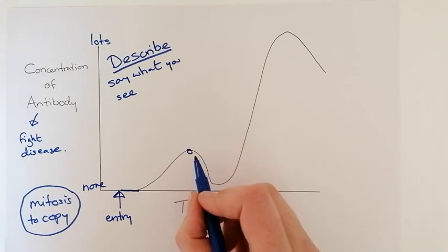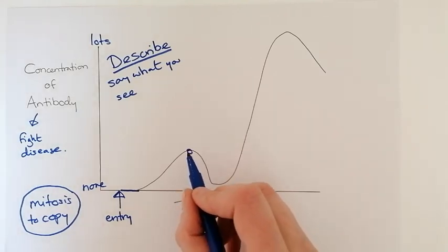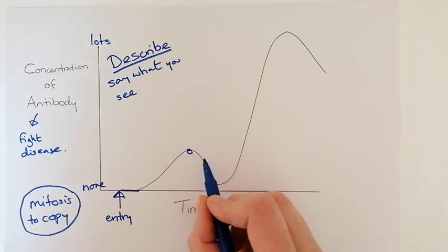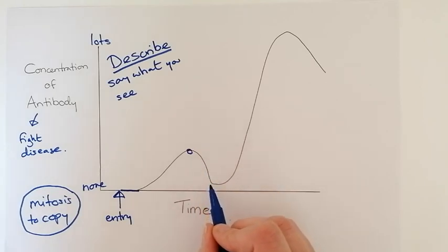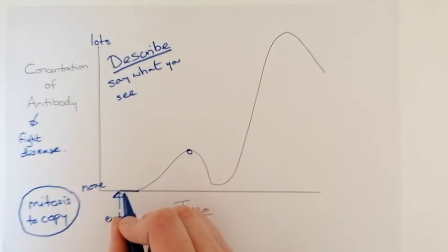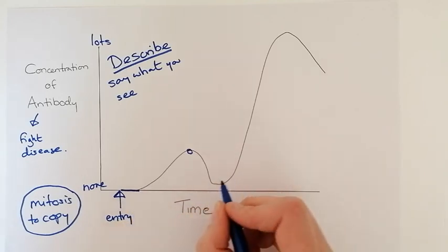Because you are now starting to get better they stop producing antibodies so the concentration slowly falls. Not all the way back to zero usually but falls a lot lower.